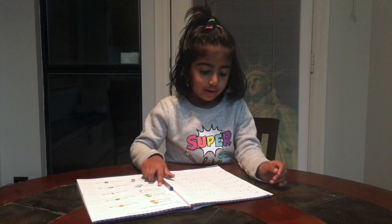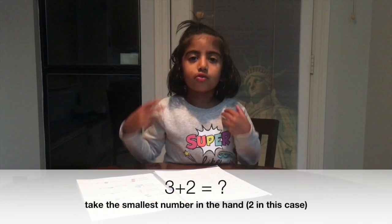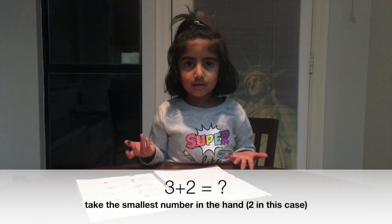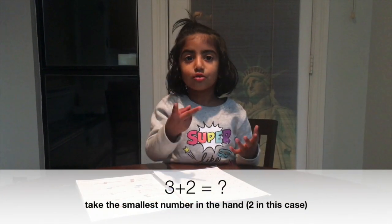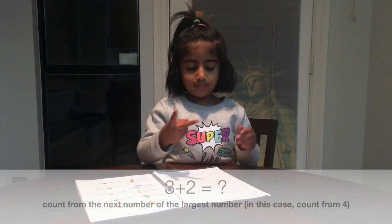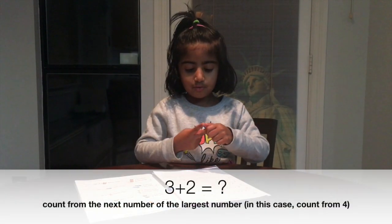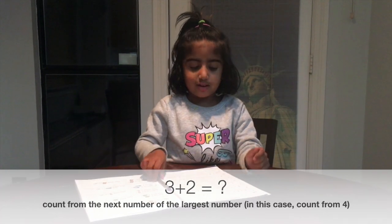3 plus 2. Which one is the smallest number? 2. Now count: 4, 5.